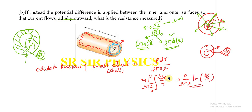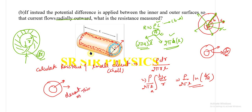Similarly, there are problems involving spheres where current flows radially outward. Everything is done the same way, except the element changes to a thin spherical shell. The resistance of a thin spherical shell is dR = ρ dr / (4πr²). Integrate from a to b to get the answer for the spherical case as well.